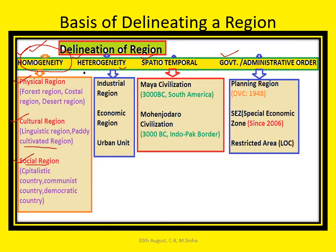The second basis is heterogeneity. On the basis of heterogeneity, a researcher or planner can delineate the area. Examples include industrial regions and economic regions. For instance, Durgapur and Asansol region is an industrial region, and Haldia as a petrochemical region is also an industrial region.